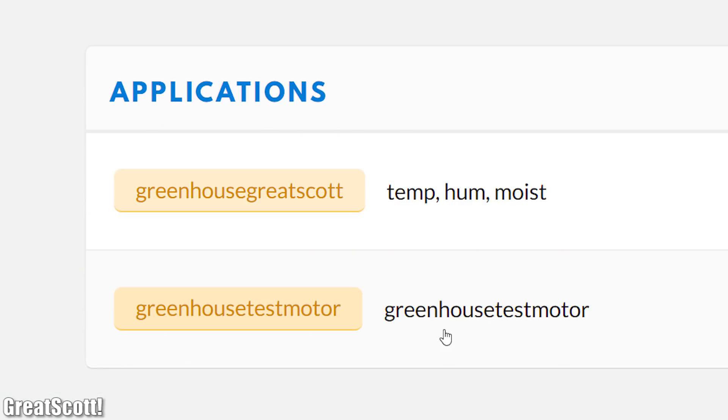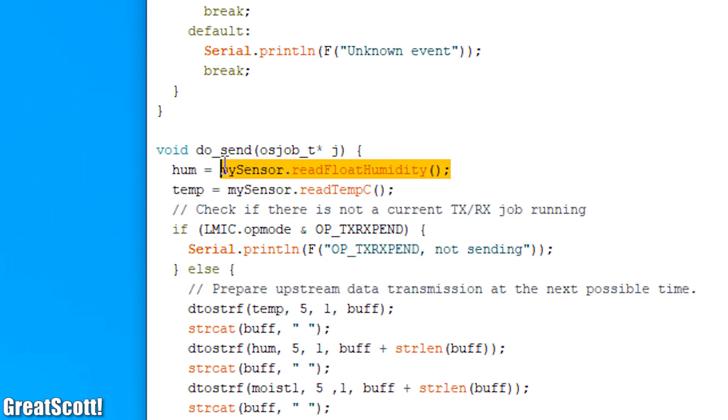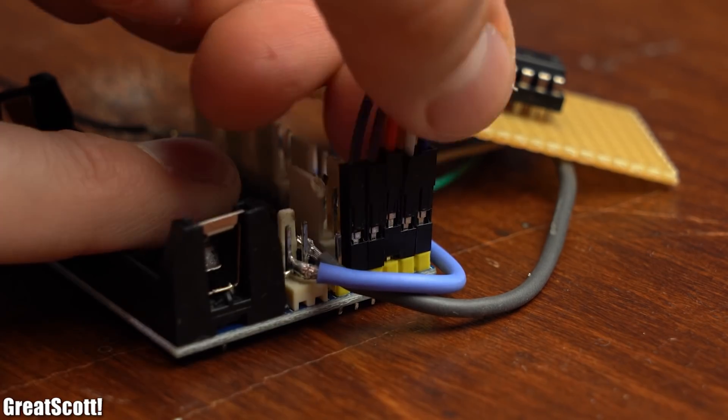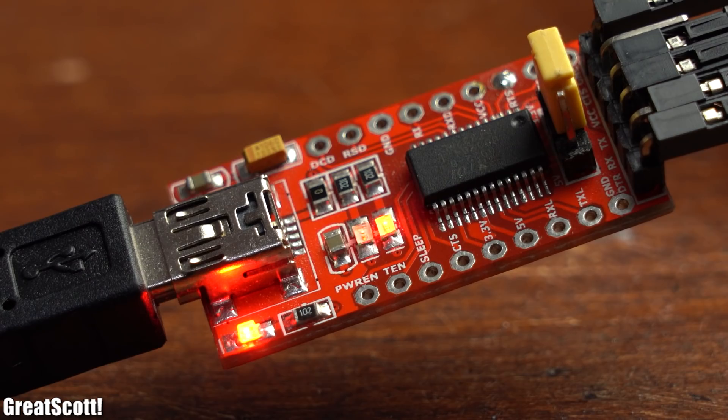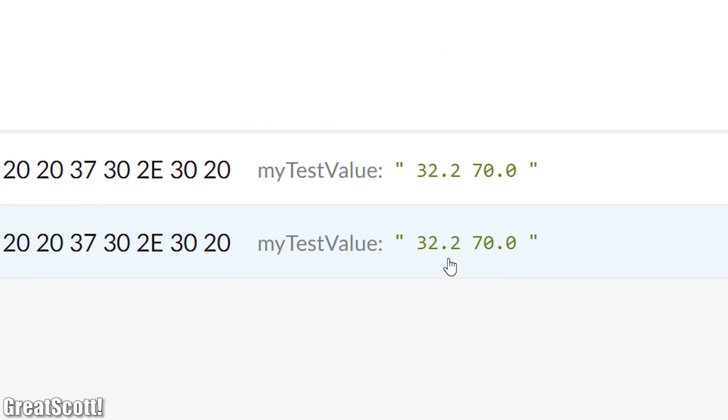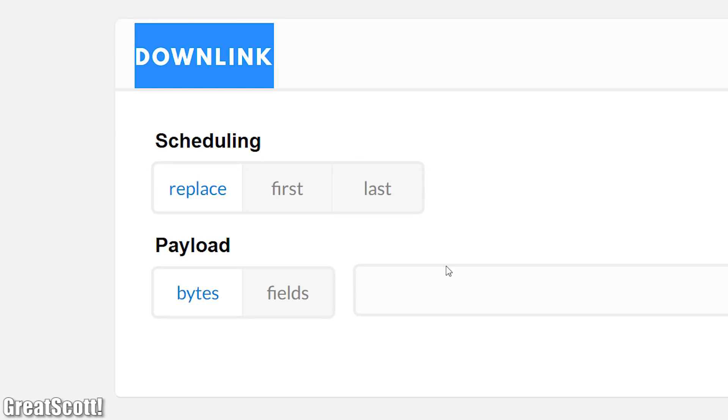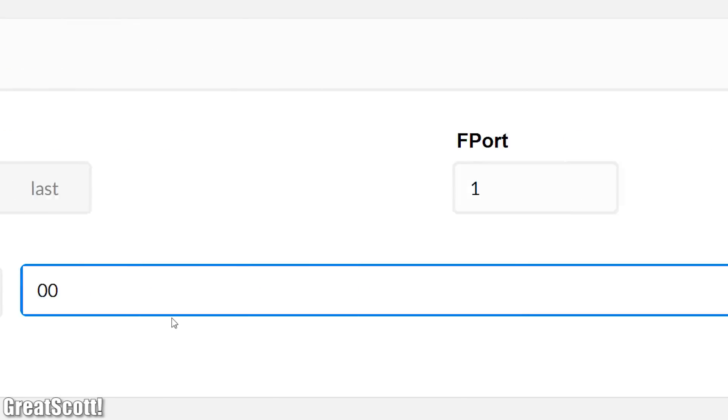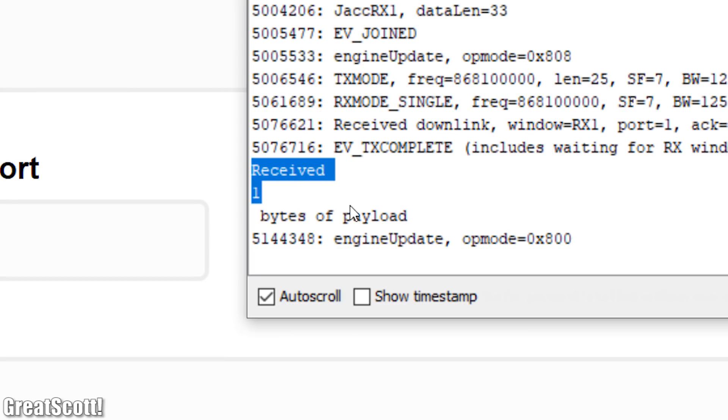After then adding this new LoRa board to the Things Network site I adjusted the code of this test device a bit so that it always uploads the same temperature and humidity data. And after hooking an FTDI breakout board up to it and uploading this new code you can see that the Things Network site gets the data successfully. And here we can actually send over data through a downlink but all the Arduino code registers is how big the received data was in bytes.